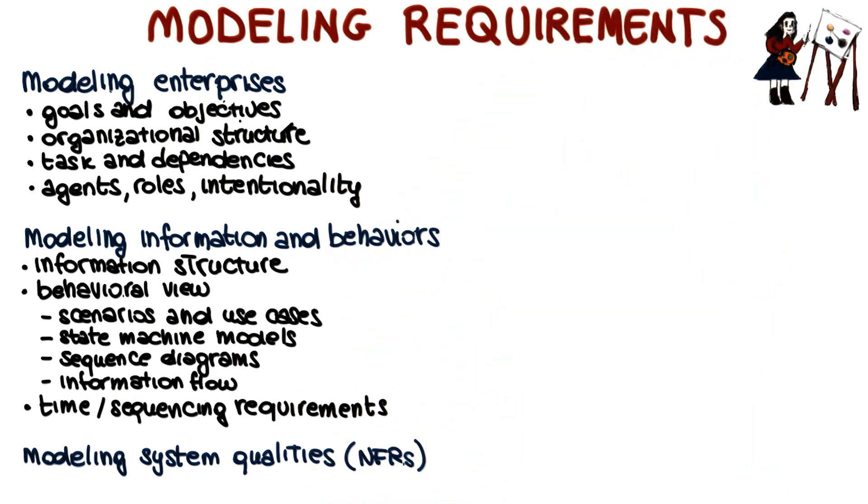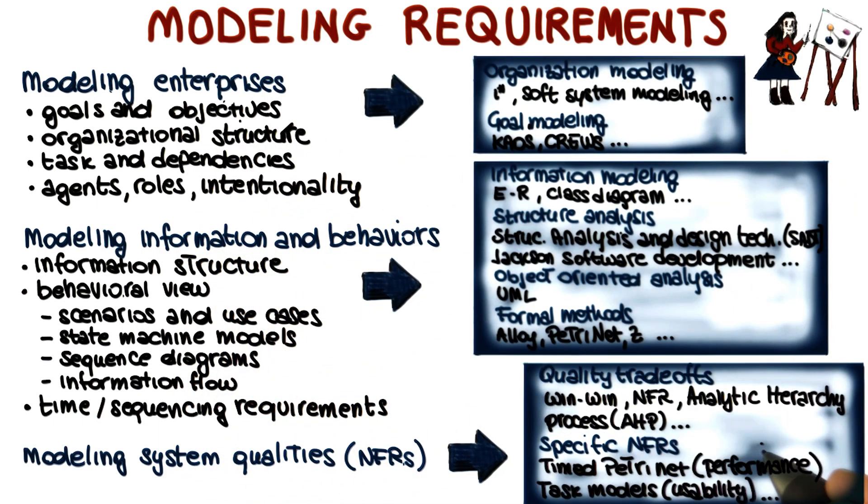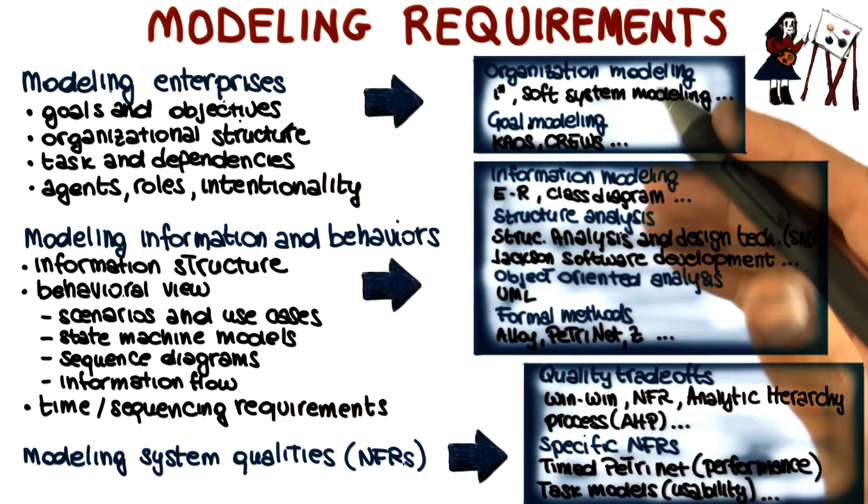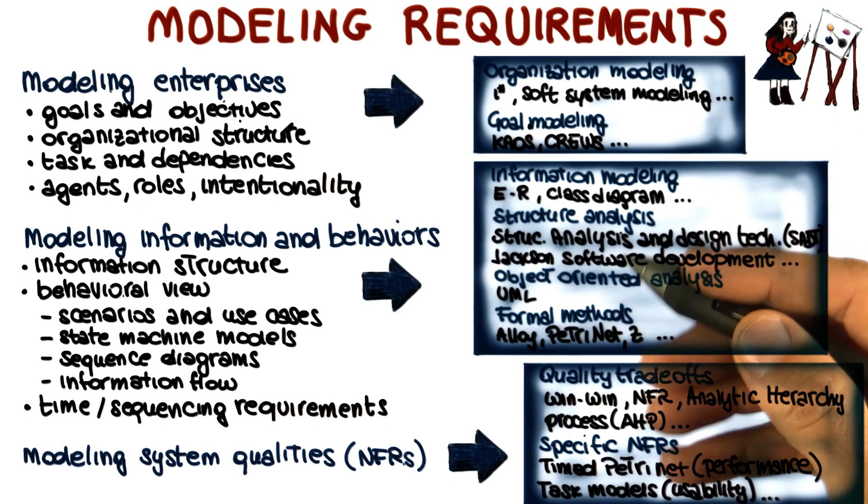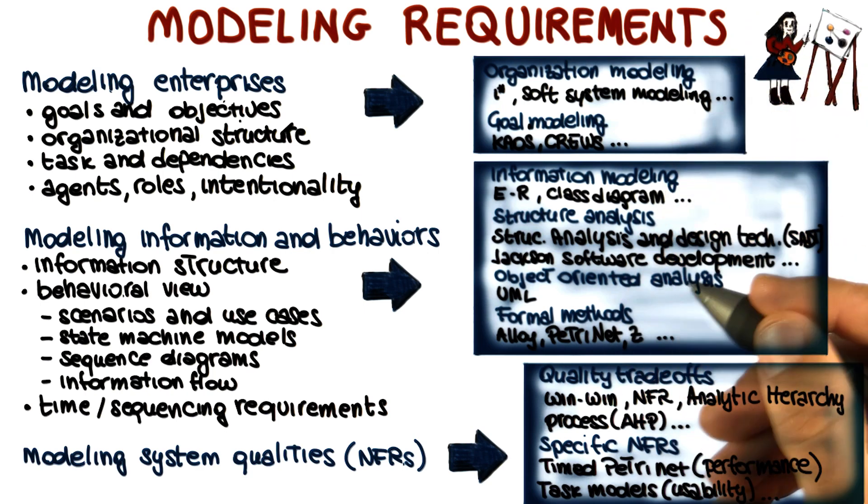So I want to show here some options for modeling enterprises, information, and quality aspects. And as you can see here, for each type of information, there are many possible models that we can use to represent it. And all these models have advantages and disadvantages, different levels of formality and different focus.